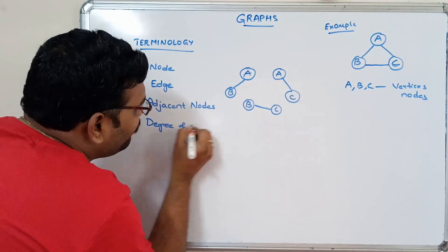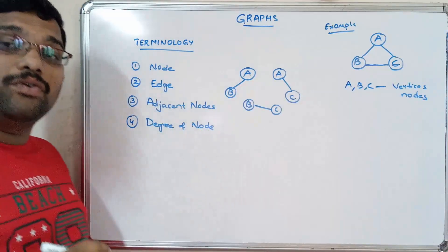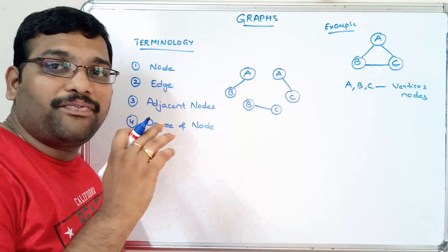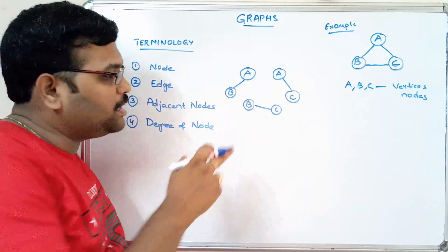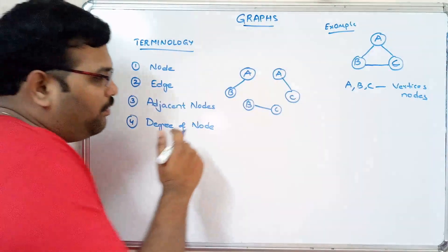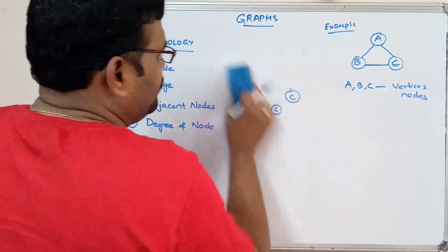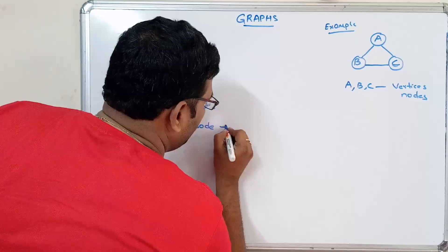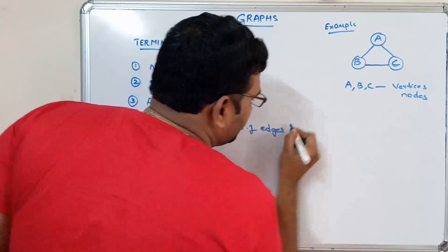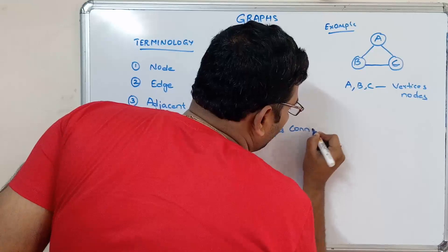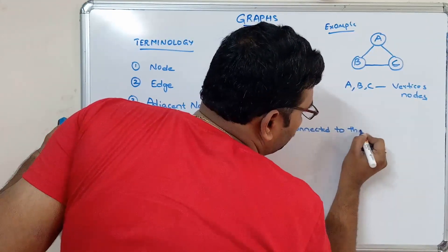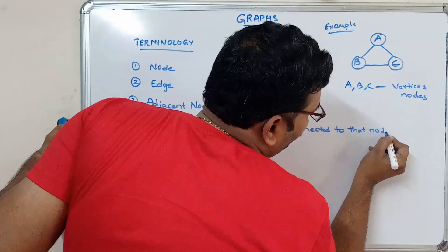Next is the degree of a node. The degree represents the number of edges connected to that particular node.